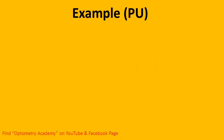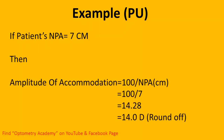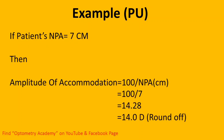Example — push-up method: if the patient's NPA is 7 centimeters, then the amplitude of accommodation equals 100 divided by 7, which equals 14 diopters (rounded off).